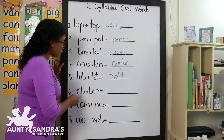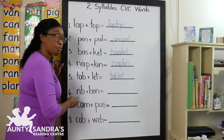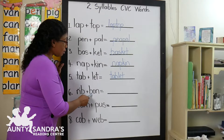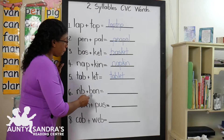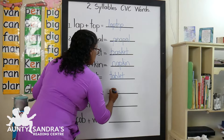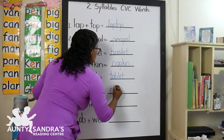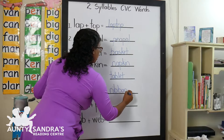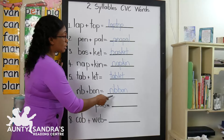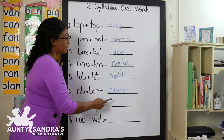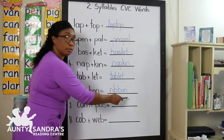The next syllable is R-I-B, Rib. And the second syllable in the word is B-O-N, Bon. Now we are going to combine our two syllables and we are going to get Rib, Bon. So the word is now ribbon. Ribbon. Okay boys and girls? Ribbon. Good job.